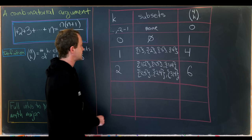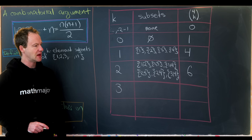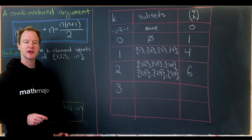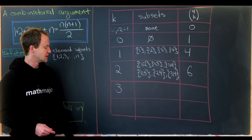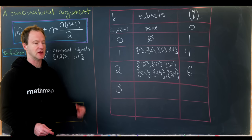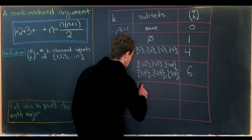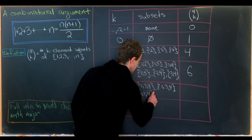Now let's go to subsets with three elements. There's a nice duality between three-element and one-element subsets — you can think of it as taking complements, or building subsets by specifying what's not included rather than what is. Since 3 is one less than 4, we exclude one element at a time: excluding 1 gives {2,3,4}; excluding 2 gives {1,3,4}; excluding 3 gives {1,2,4}; excluding 4 gives {1,2,3}. That's all four such subsets.